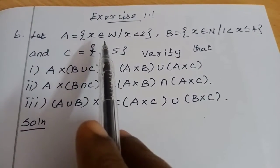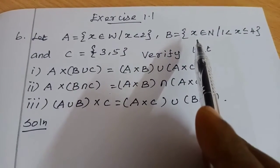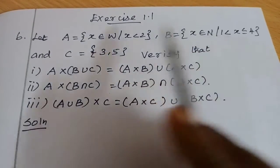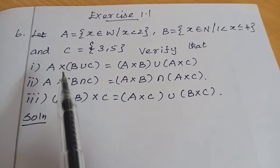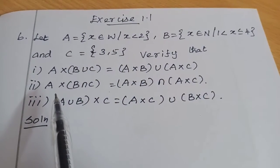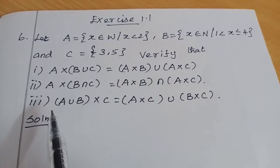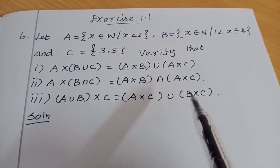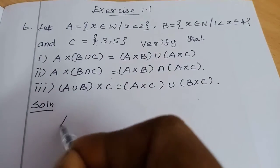Let A equal to the set of X belonging to W such that X less than 2. B equal to the set of X belonging to N such that 1 less than X less than or equal to 4. And C equal to {3, 5}. Verify: first, A×(B∪C) = (A×B)∪(A×C); second, A×(B∩C) = (A×B)∩(A×C); third, (A∪B)×C = (A×C)∪(B×C).